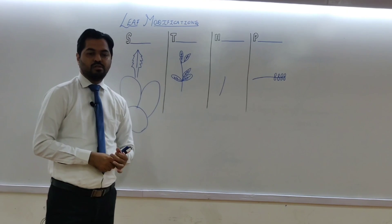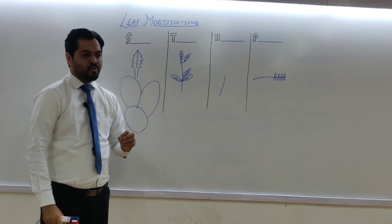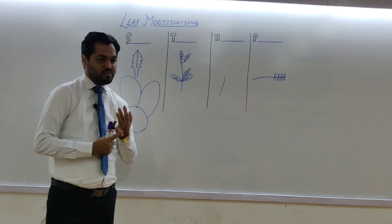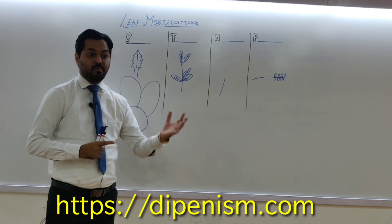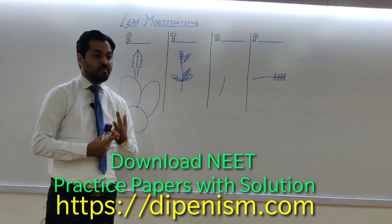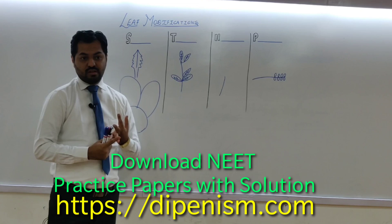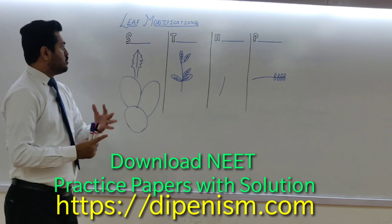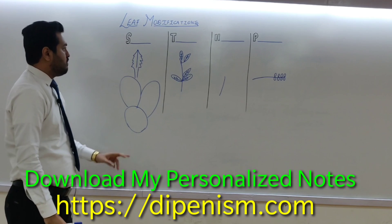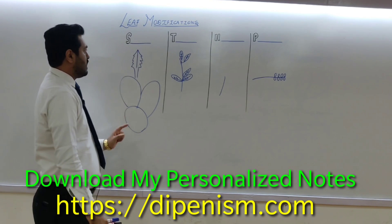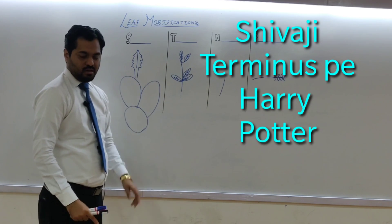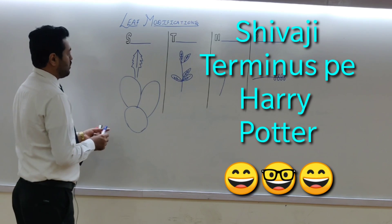Now we are discussing leaf modifications. In morphology we had a lot of modifications — we had root modifications, more than 18-19 modifications. Finally, the 4 modifications mainly discussed are those of leaf. In leaf modifications, remember 4 major modifications: STHP — Shivaji Terminus and Harry Potter. Remember that Shivaji Terminus is Harry Potter.